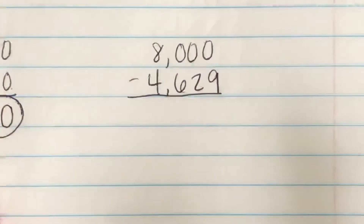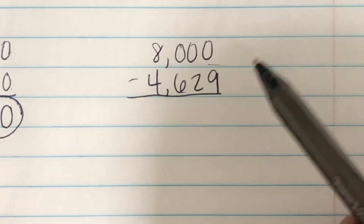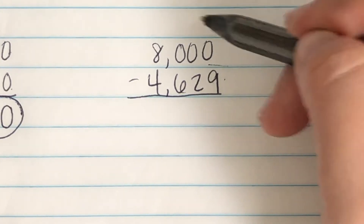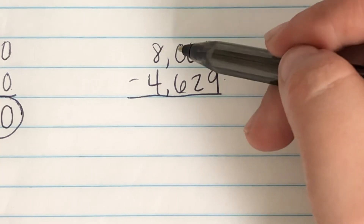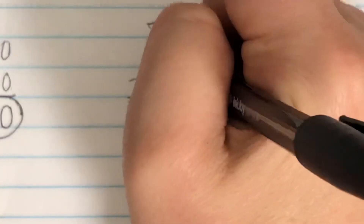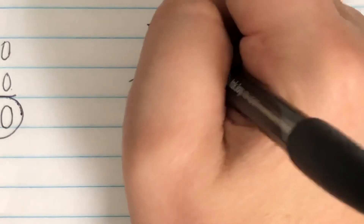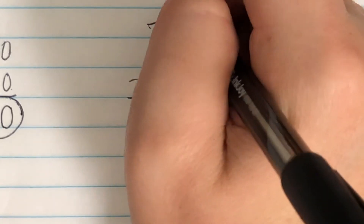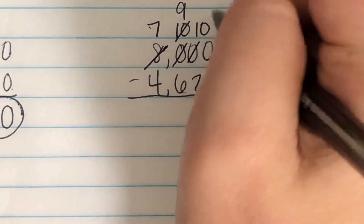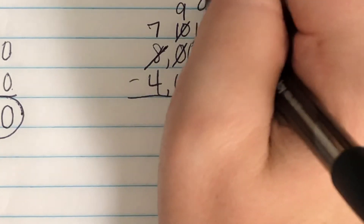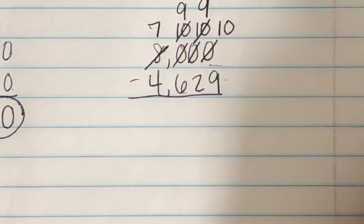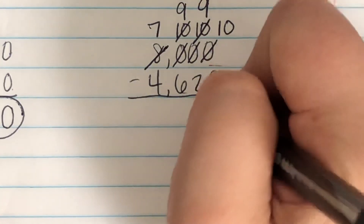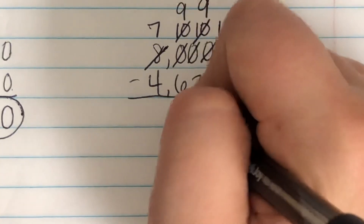Let's do one more regular across-zeros problem. There is more on the floor so we have to go next door — no one is home. Go next door again — no one's home. The hundreds place goes to the eight. There is someone home. We're going to take one from the eight and he's going to become a seven. We're going to give the one to the hundreds place — he becomes a ten. The ten is now going to give one to the tens place, so this ten becomes a nine. We're going to give one to the tens place to become a ten. Now the tens place is going to share one with the ones place — so we're going to mark the ten out, he's going to become a nine, and the zero is going to become a ten. So now: ten minus nine is one, nine minus two is seven, nine minus six is three, seven minus four is three. Drop your comma.